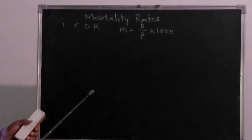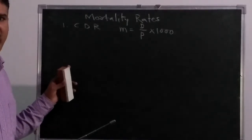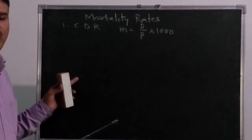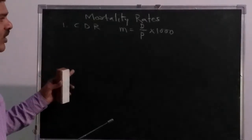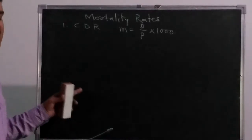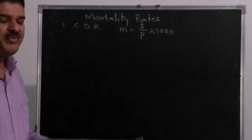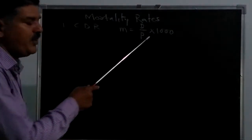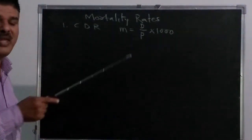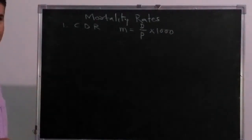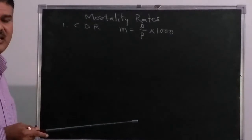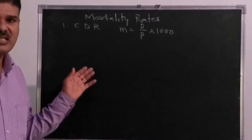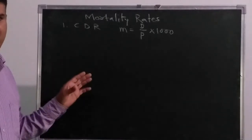One such limitation is that CDR does not consider the age and sex composition of the population. Suppose if I am interested in knowing the death rate according to a particular age, I can't determine that using CDR, because in CDR we take total deaths per 1000 population. This total number of deaths may consist of many factors — deaths may be according to age, according to sex, or according to diseases.